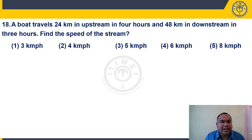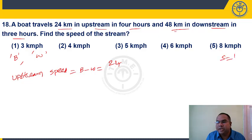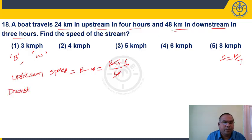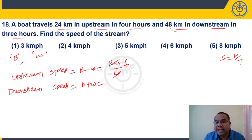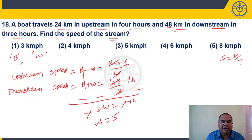Question 18: A boat travels 24 km upstream in 4 hours and 48 km downstream in 3 hours. Find the speed of the stream. Upstream speed = B − W = 24/4 = 6. Downstream speed = B + W = 48/3 = 16. Subtracting: −2W = −10, so W = 5 km/h. Answer: choice 3.